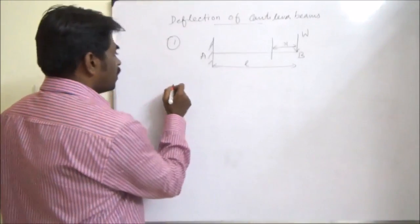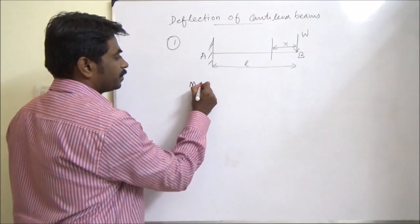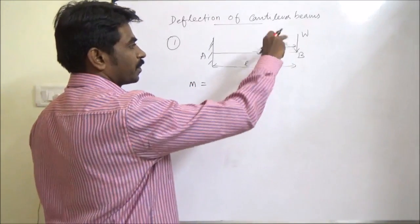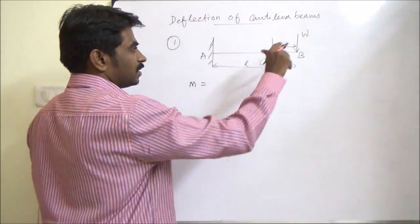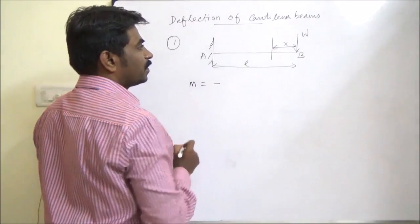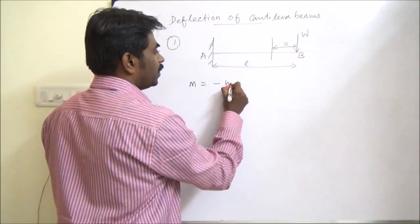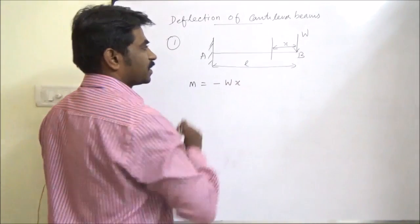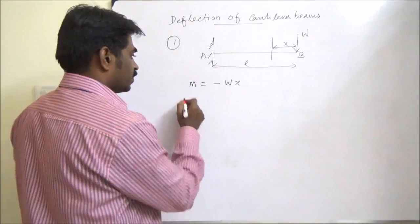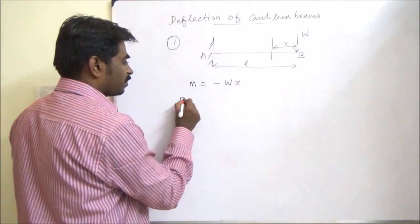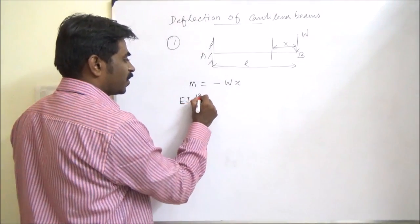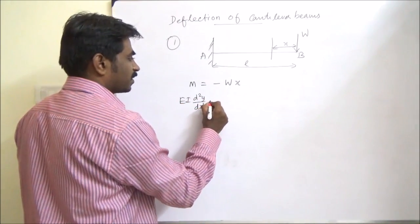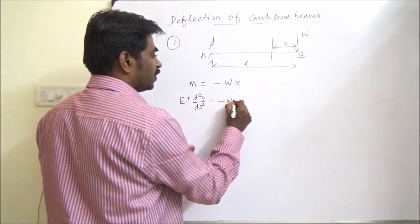So what is the bending moment? Taking x from the free end, the moment is clockwise and negative, so the bending moment equation is: EI d²y/dx² = Wx.